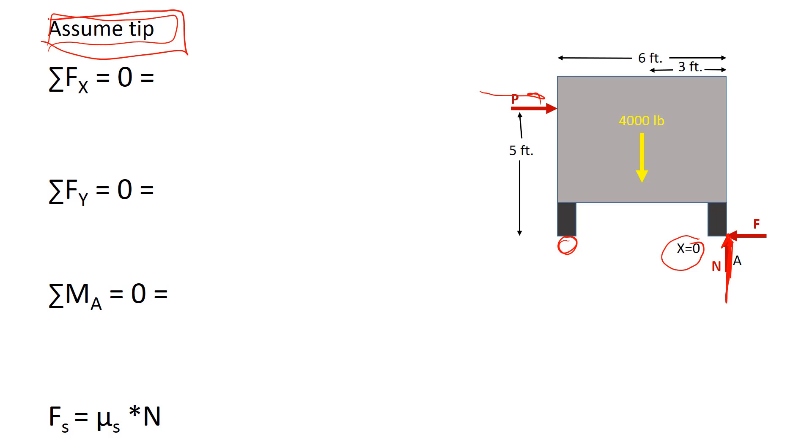And now we have our problem down to three unknowns and three equations of equilibrium. Once we sort out the equations of equilibrium and find our friction, we can compare it to our equation for static friction and see if the friction is sufficient to hold this thing in place and let it tip, or if there's not enough friction and it would have slid instead.